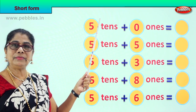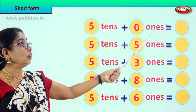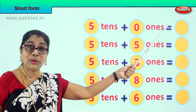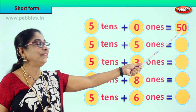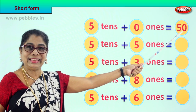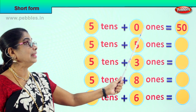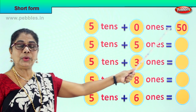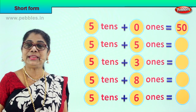5 tenths plus 0 ones is equal to? Good, 50. Just 5 tenths and 0 ones equal to? 50.